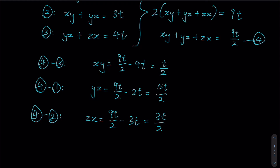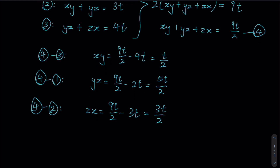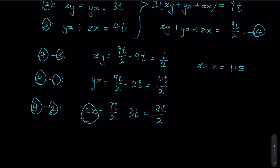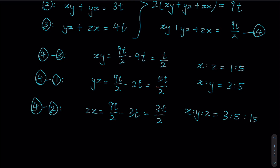Now we can compare the values of the three products: xy, yz, and zx. Comparing xy to yz — since y is common in both — we can compare x and z directly, giving a ratio of 1 to 5, so x to z is 1 to 5. Comparing zx to yz — z is common — gives x to y as 3 to 5. Combining both ratios, x to y to z is 3 to 5 to 15.